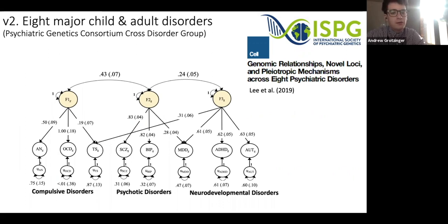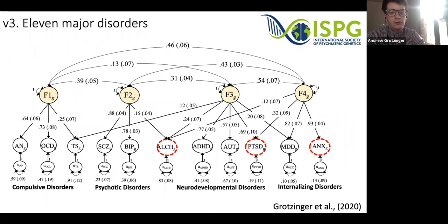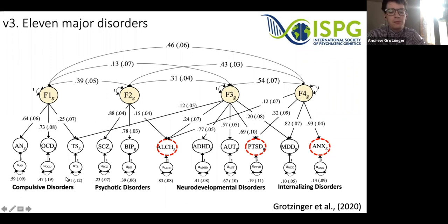We've updated that model further to include three additional disorders shown in red for a MedRxiv preprint in 2020. With their inclusion, we're now pulling out a fourth internalizing disorders factor that maps nicely onto a lot of the phenotypic factor modeling work done for psychiatric disorders. And I'd highlight that with updated sample sizes, we're still pulling out those same compulsive, psychotic, and neurodevelopmental factors from the Cell paper.